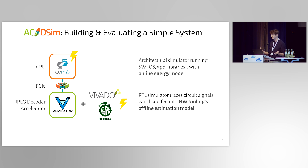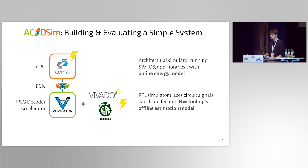How does ACDSim estimate the energy consumption in the system? GEM5 already comes with an online energy model, meaning energy is computed directly during the simulation. This energy model uses the simulated CPU's execution statistics like the current processor frequency, the number of instructions executed, and cache misses, which are continuously collected over small time spans. In comparison, the accelerator is estimated offline — I configure Verilator to trace the circuit signals. After the simulation completes, this gives me a trace file which I feed into the energy estimation tool from a hardware toolchain. All major toolchains already come with energy estimation and accept circuit signal information to provide more accurate results.